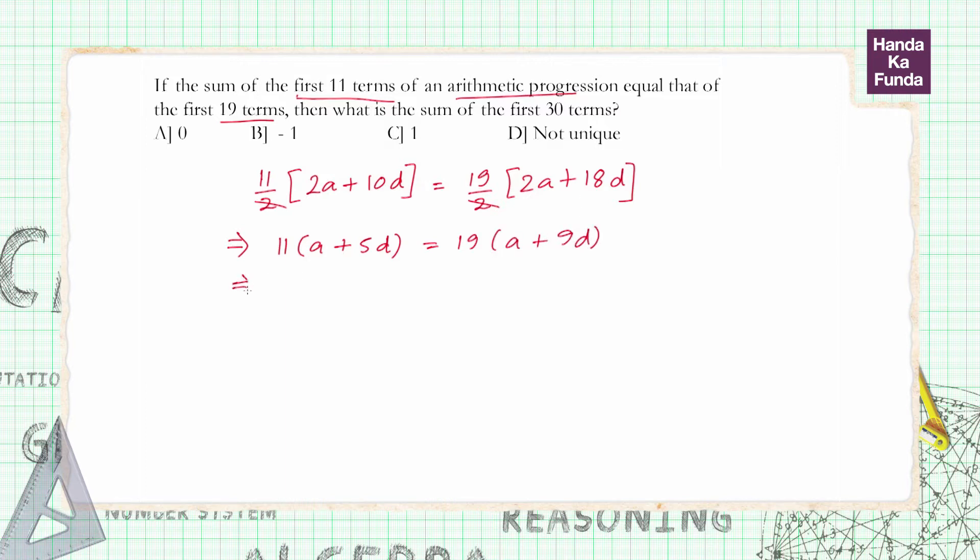If I solve this I will get 11A plus 55D is equal to 19A plus 19 into 9, 190 minus 19 or 171D.